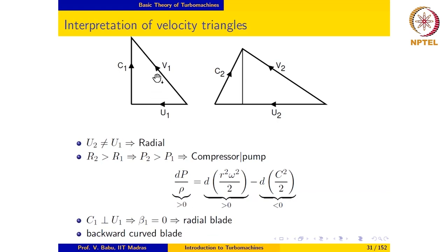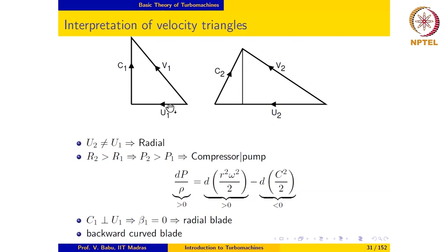In contrast, if alpha1 is equal to 0 at inlet, that situation would be referred to as radial entry in the case of a radial machine, and it would be referred to as axial entry in the case of an axial machine. So beta equal to 0 implies that the blade is radial or axial as appropriate, and alpha equal to 0 implies radial or axial entry or exit depending on whether it is a radial or axial machine. Furthermore, since the relative velocity C curves away from the direction of the blade speed, we can infer that the blade is a backward curved blade for this particular case.